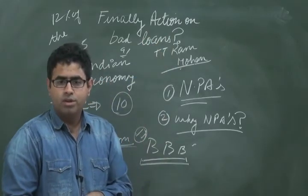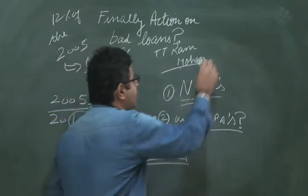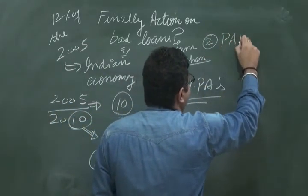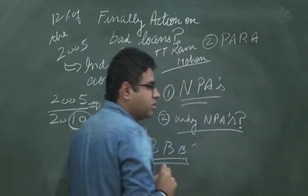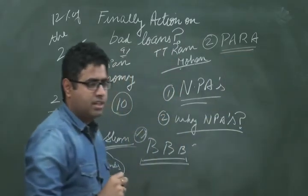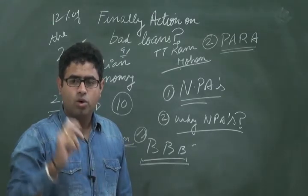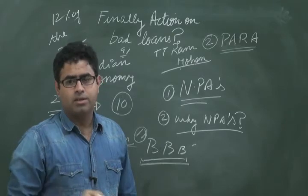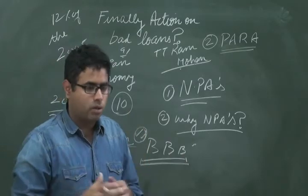There are other efforts the government has taken. The government is proposing to set up a Para Public Asset Reconstruction Agency. This agency has been suggested in this year's economic survey. This agency will look at the bad loans of the banks and suggest how to do away with these bank loans.